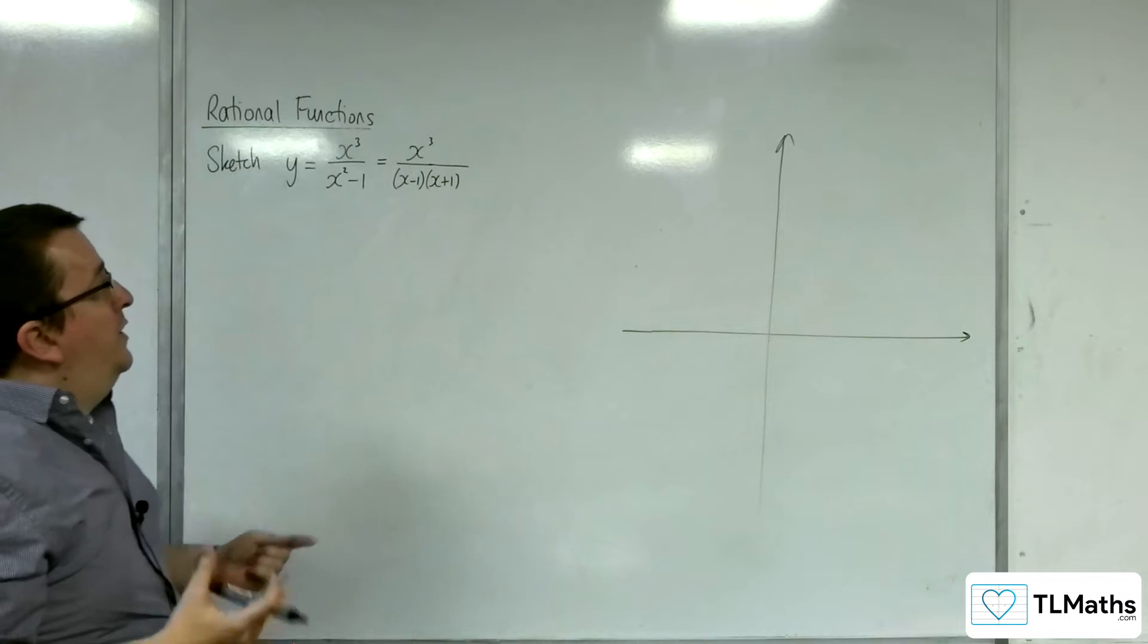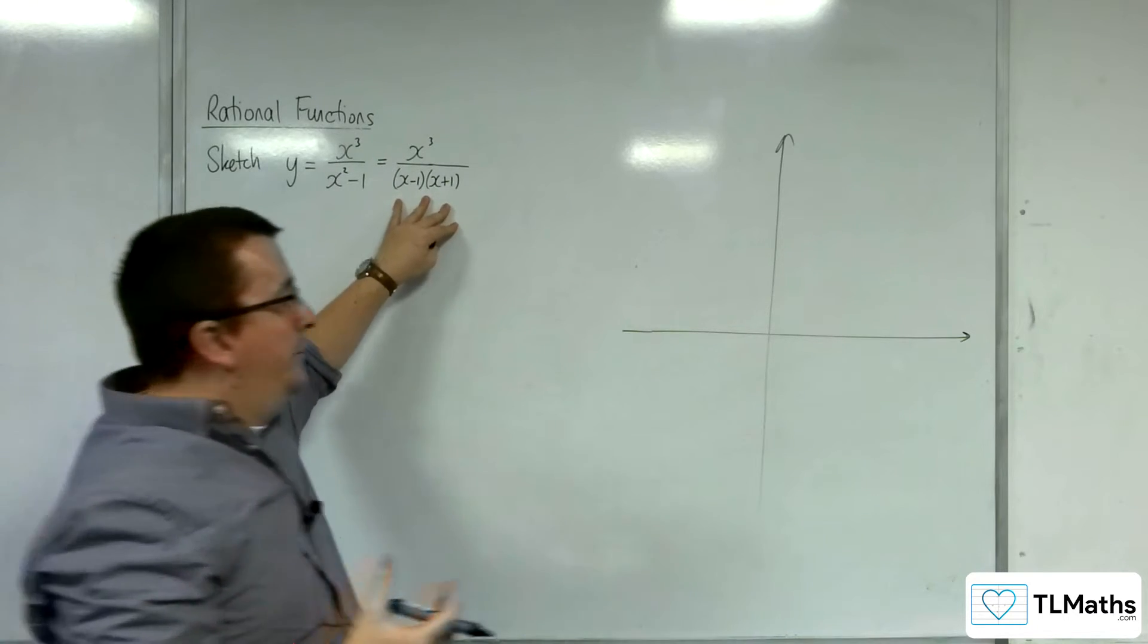First of all, vertical asymptotes are going to exist when the denominator is 0, so that's x = 1 and x = -1.